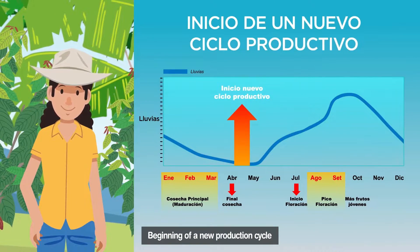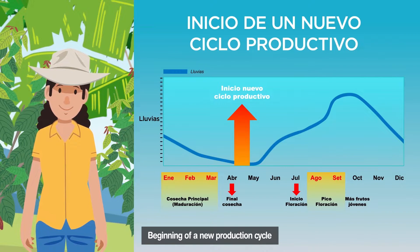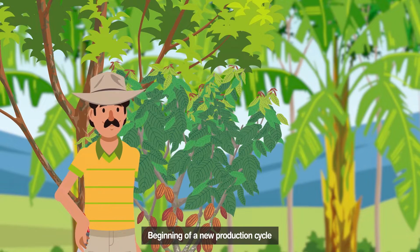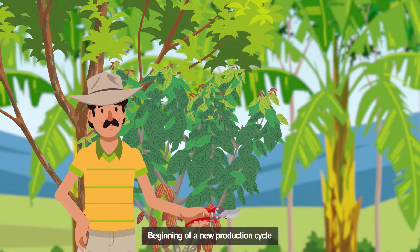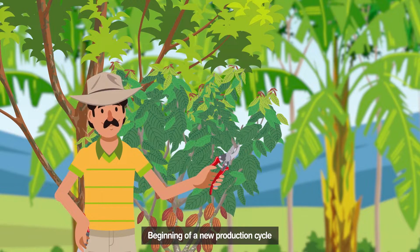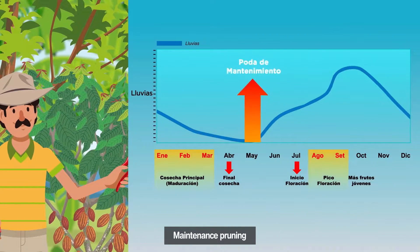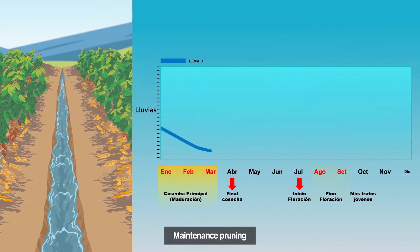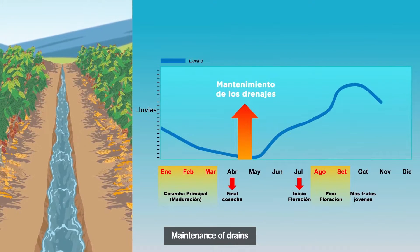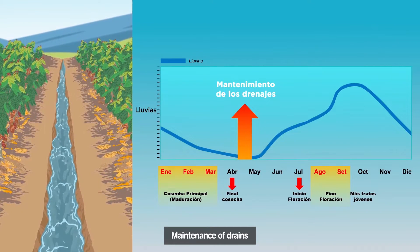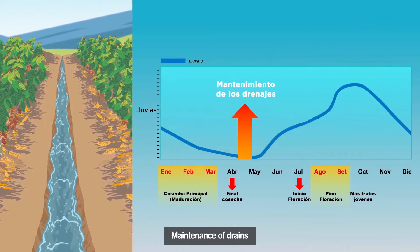Next, we will show you an example of the construction of an IPM plan. This is how the plan begins. A maintenance pruning of the cacao trees is carried out, which is generally prior to the start of the rains. In pruning, we must take advantage of eliminating all the diseased fruits of any size and with any symptoms when we see them. Remember that at this time, we must also maintain the rains on the ground to avoid puddles.